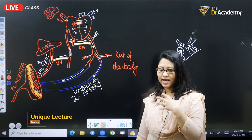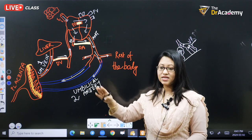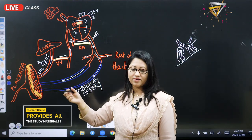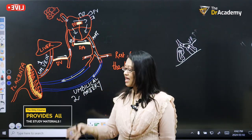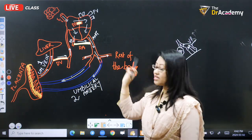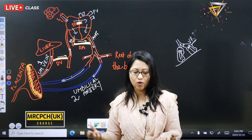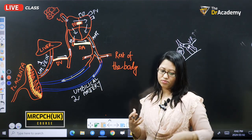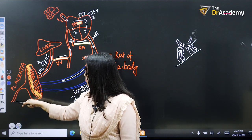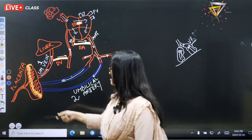In the adult body, arteries carry more oxygenated blood than veins. But in the fetus this is completely reversed: the umbilical vein carries more oxygenated blood and the umbilical artery carries less oxygenated blood. Because the lung is not working, oxygenation comes from the mother, who supplies oxygenated blood through the placenta to the fetus.